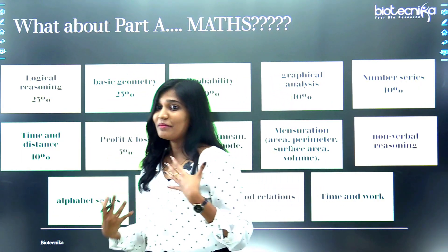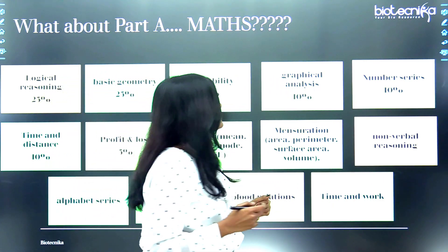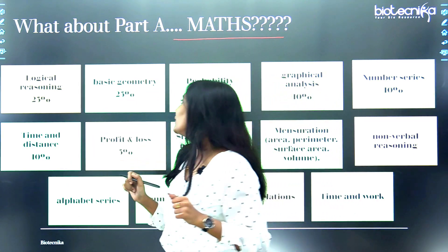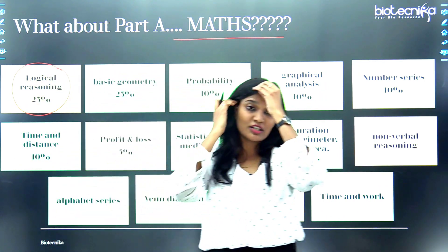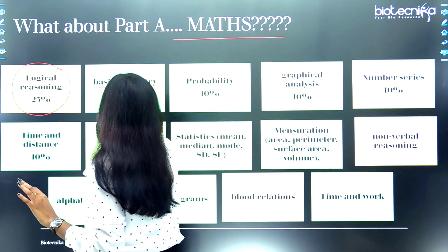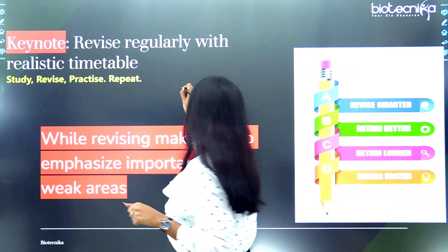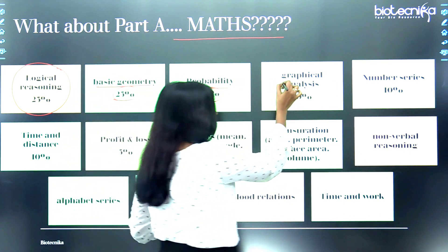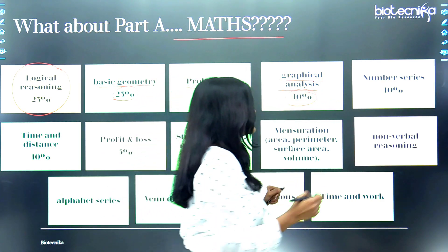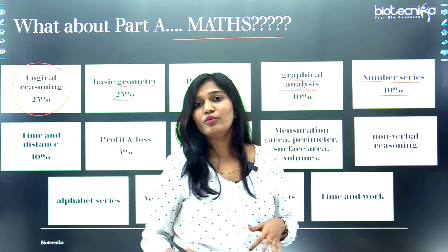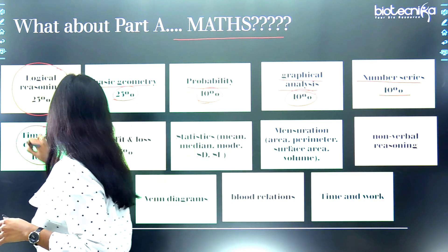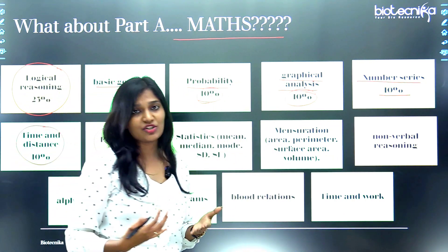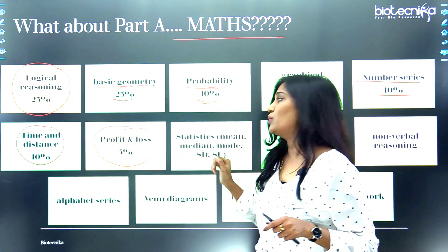For Part A — aptitude or mathematics — here are the topics and their weightages. Logical reasoning: 25%. Geometry: 25%. Probability: 10%. Graphical analysis: 10%. Number series: 10%. Time and distance: 10%. Profit and loss: approximately 5%. For the remaining topics, refer to previous year question papers. These are the topics to concentrate on for Part A.